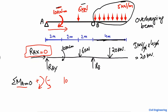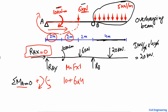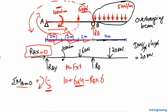The 6 kilonewton load also creates a clockwise moment about point A, so it is positive. The moment equals force multiplied by the moment arm. The moment arm from the load to point A is 2 meters plus 2 meters, which equals 4 meters. The reaction RB, assumed acting upward, creates an anti-clockwise moment about point A, so it is negative. The moment arm for RB is the total distance of 2 plus 2 plus 2, which equals 6 meters.